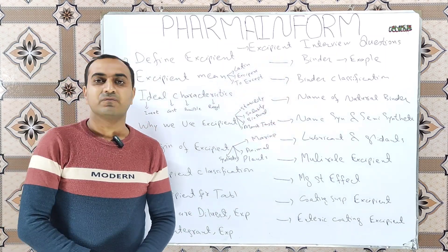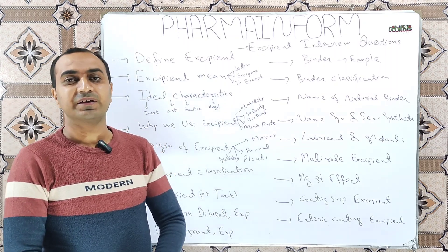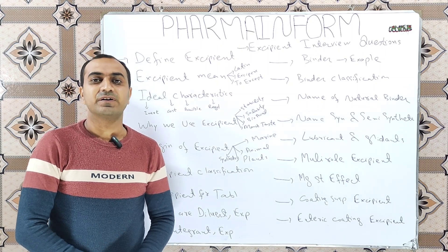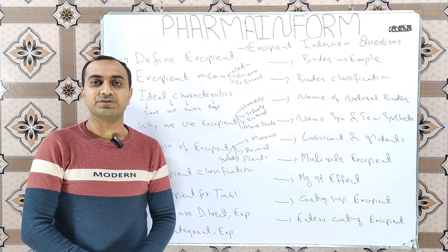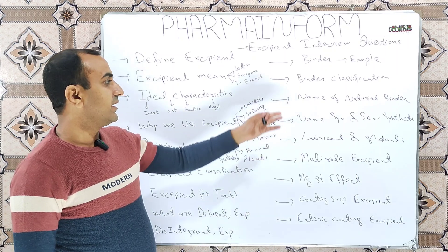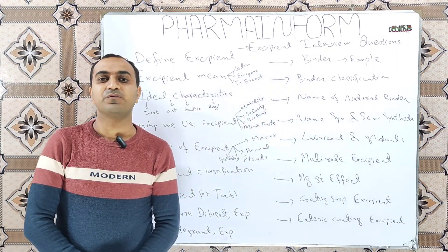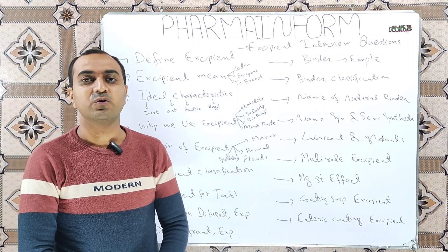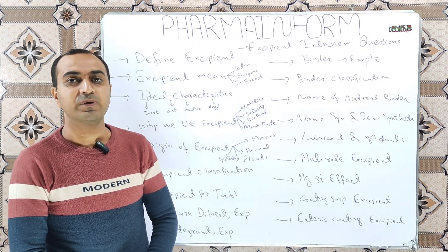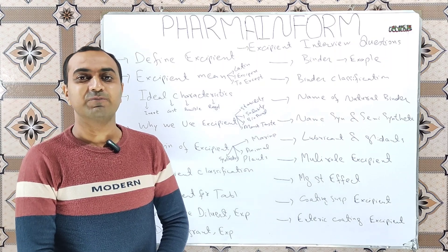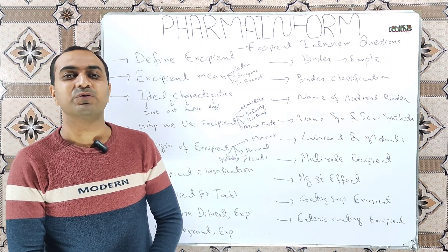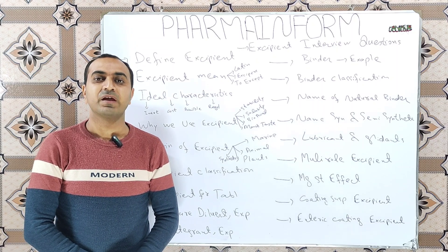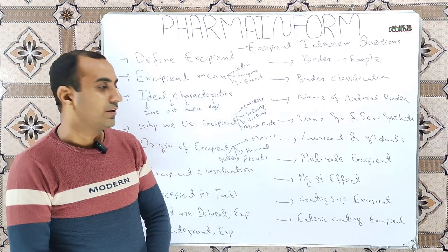What are examples of natural binders? Examples of natural binders are gums like Tragacanth and Acacia, as well as starch and gelatin. The synthetic binder is polyvinylpyrrolidone, also known as PVP or Kollidon. The example of a semi-synthetic binder is hydroxypropyl methylcellulose and hydroxypropyl cellulose.